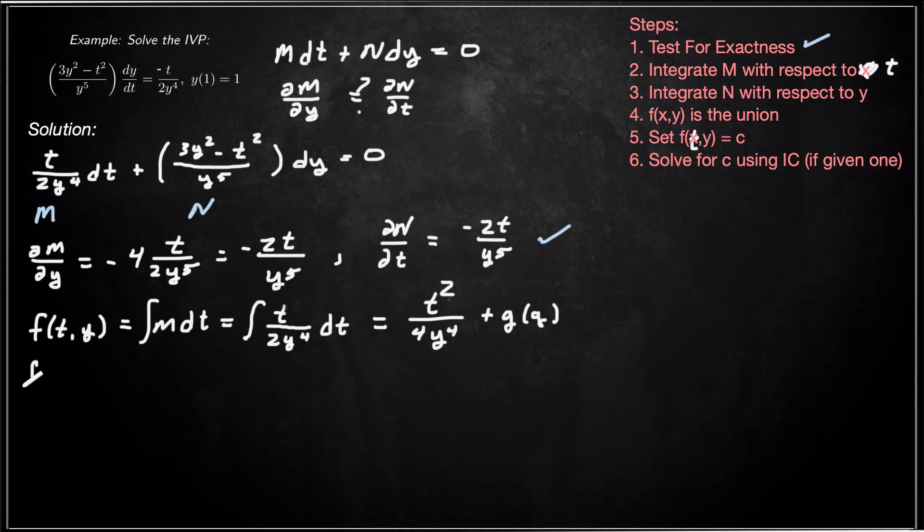And then f(t,y) if we integrate N with respect to y, that'll be the integral of, let's see, if we reduce that N down we get 3/y³ minus t²/y⁵ dy.